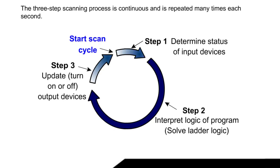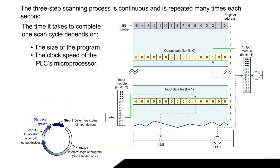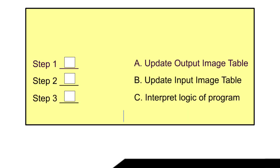The 3 step scanning process is continuous and repeated many times each second. The time it takes to complete one scan cycle depends on the size of the program and the clock speed of the PLC's microprocessor. Let's try a couple of practice problems.